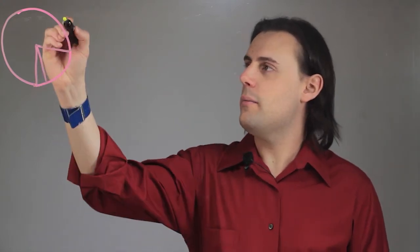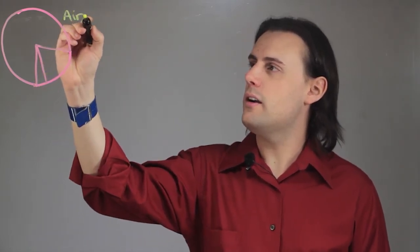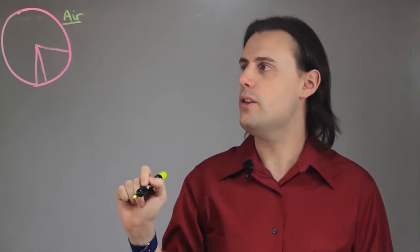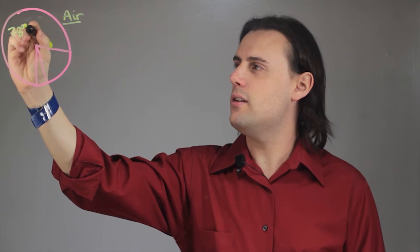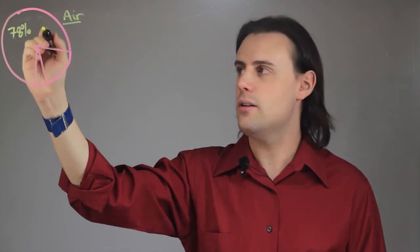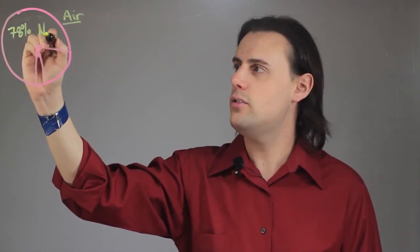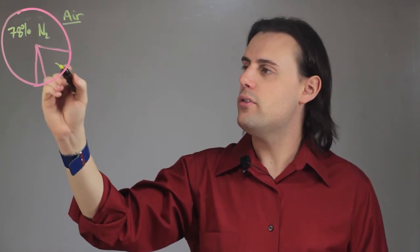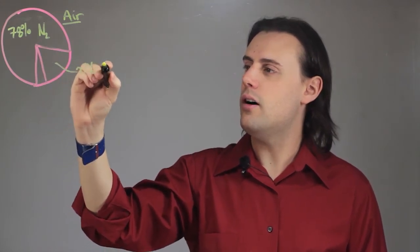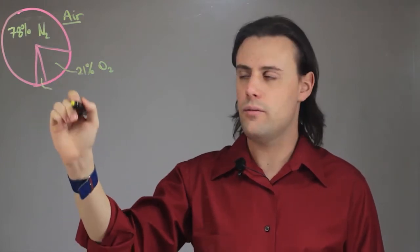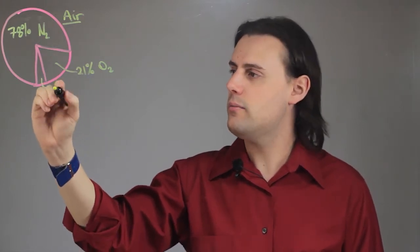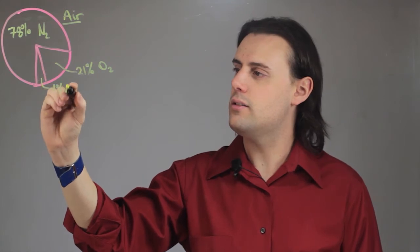So, if we examine the makeup of air in the atmosphere here on Earth, we'll notice that approximately 78% of the air is comprised of nitrogen, or N2. 21% of air is oxygen, O2, and most of the remaining 1% of air is argon.